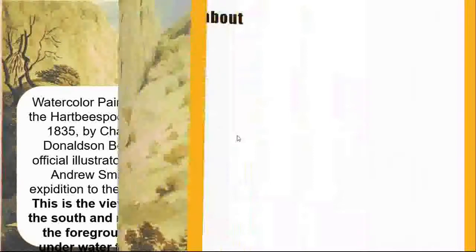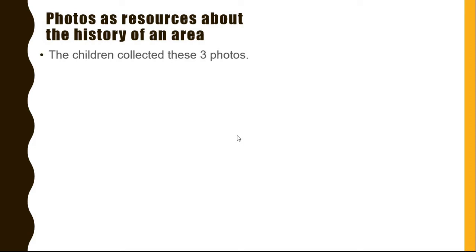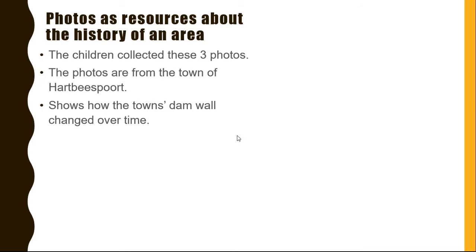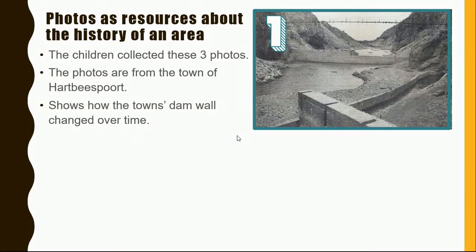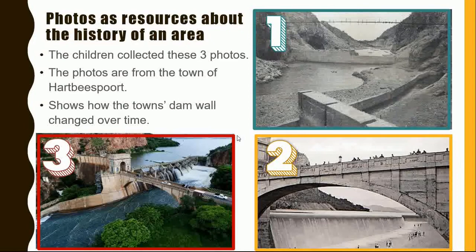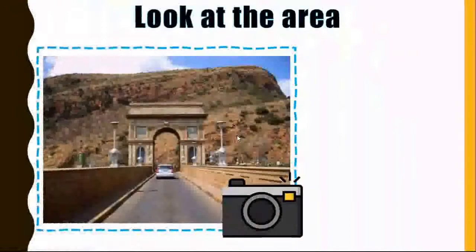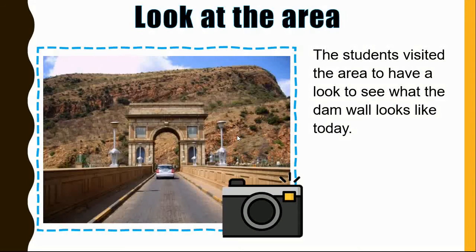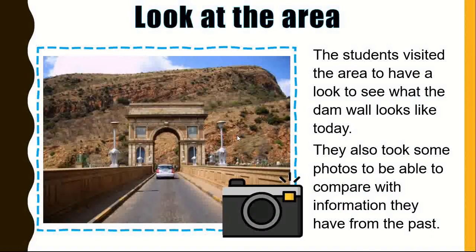Photos as resources about the history of an area. The children collected three photos from the town of Hartbeespoort, showing how the town's dam changed over time. You will see that it progressed, grew and developed over time. Students also visited the area to see what the dam looked like today and took photos to compare with information they have from the past.